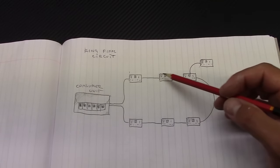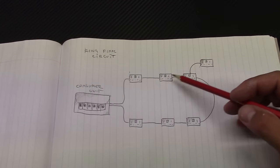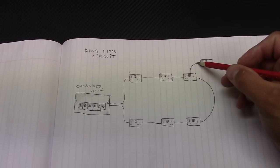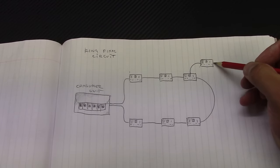On the ring we've got six socket outlets. 1, 2, 3, 4, 5, 6 and also from this socket outlet we've got one unfused spare which is here.